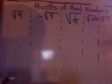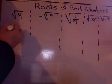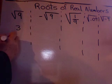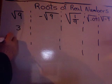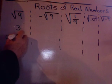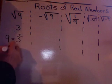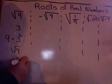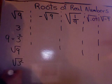Okay, let's look at some roots of real numbers. Square root of 9 is 3. Do you know why? Because 9 equals 3 squared. So square root of 9 is the same thing as the square root of 3 squared, is 3.